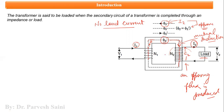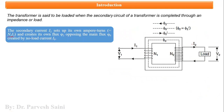When phi2 opposes the main flux phi-naught, it tries to weaken it. This reduced flux tends to reduce the value of e1 — the EMF induced in the primary winding. The secondary winding's magnetomotive force is n2 times i2, which generates its own flux and opposes the main flux.